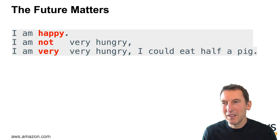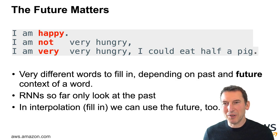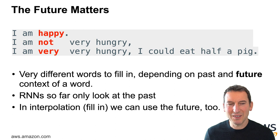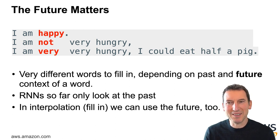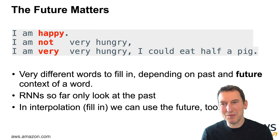So in other words, very different words can be filled in depending on what the past and future context for a word is. Unfortunately, our recurrent neural network so far only looked at the past. But in interpolations we fill in, we actually want to use the future as well.